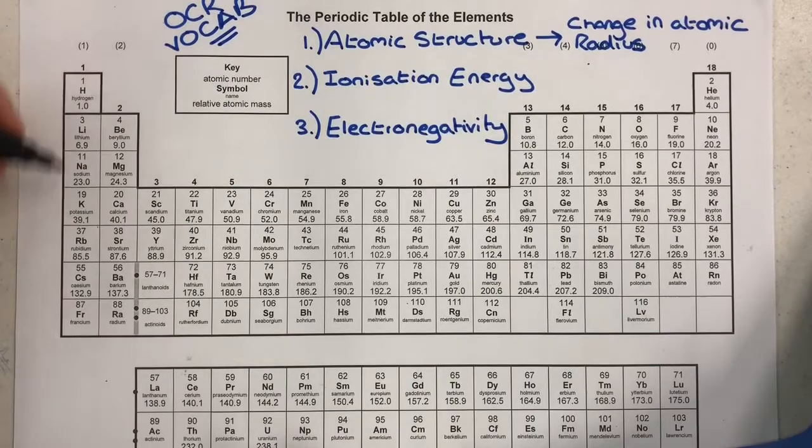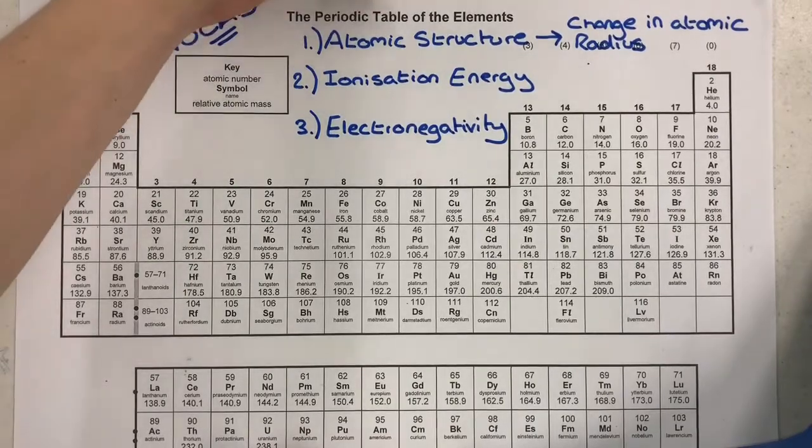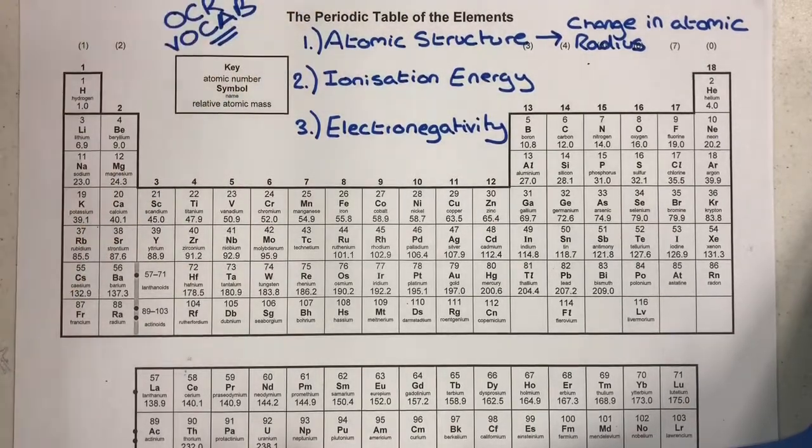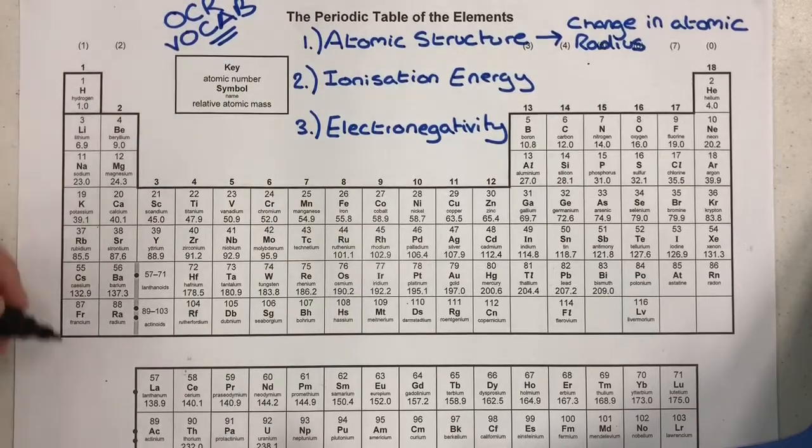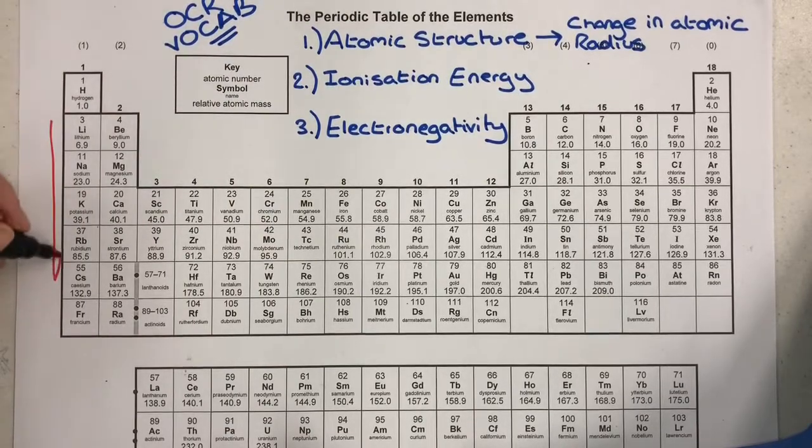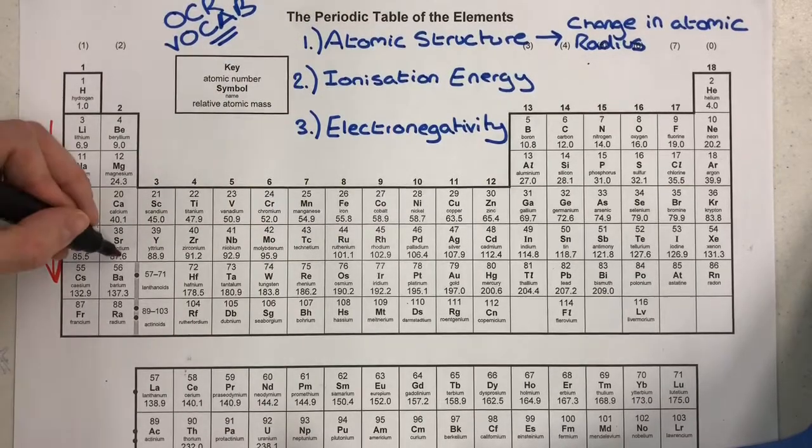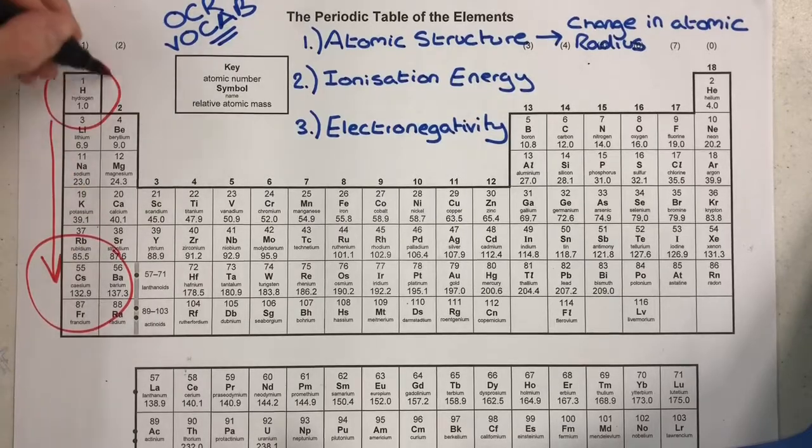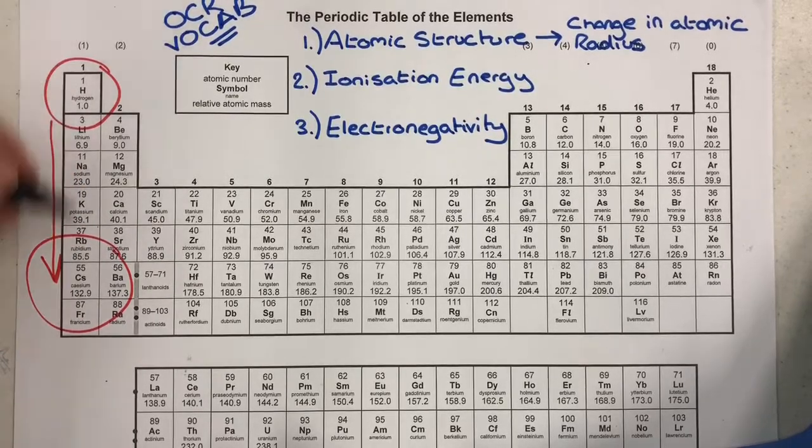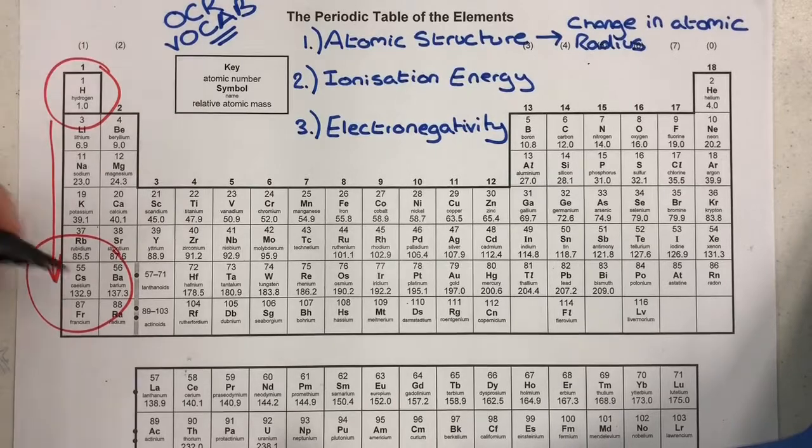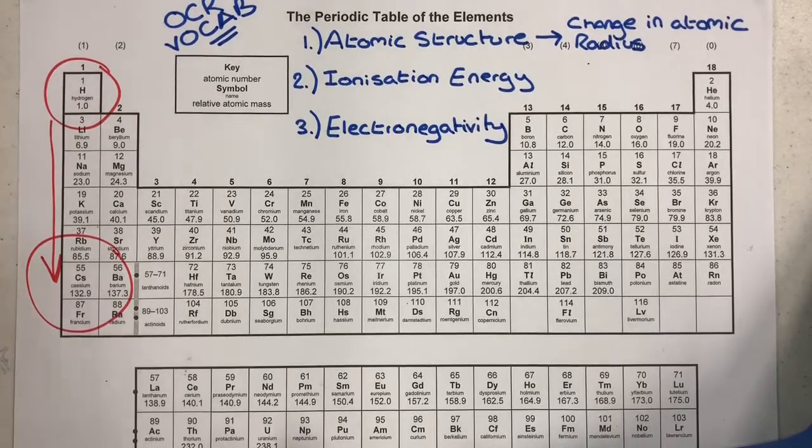So the first thing I want to mention is what happens as we go down a group with regards to our change in atomic radius. Well it's quite simple really, as you go down the group we're going to see that atoms generally get larger. Going down the group we see that atomic radius increases and this is very simple to explain.